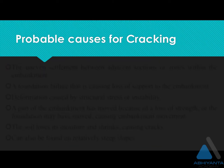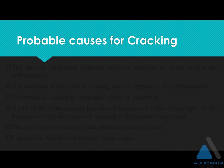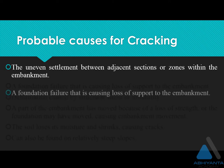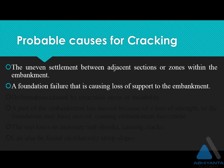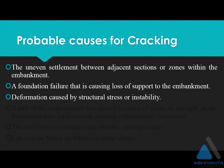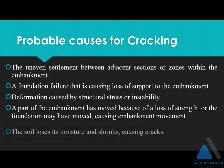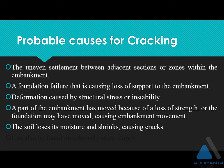So what can be the probable causes for cracking? Uneven settlement may be there between adjacent sections or zones within the embankment. A foundation failure that is causing loss of support to the embankment. Deformation caused by structural stress or instability. A part of the embankment may have moved because of a loss of strength, or the foundation may have moved causing an embankment movement. The soil loses its moisture and it may shrink, which also can cause a crack.